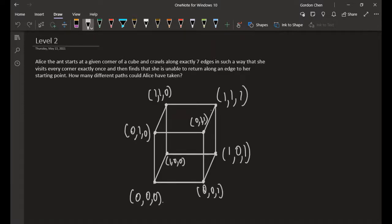Alice crawls along exactly seven of the edges and she visits every corner once. She finds that she is unable to return along an edge to her starting point.